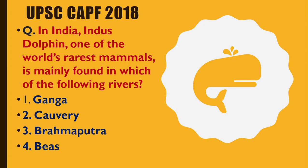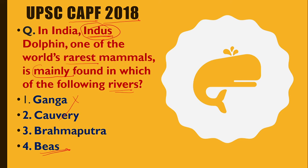Questions about the Gangetic Dolphin have been asked in UPSC examinations. In UPSC CAPF exam 2018, the question was: In India, the Indus Dolphin — one of the world's rarest mammals — is mainly found in which of the following rivers? Note carefully: it says 'Indus Dolphin,' not Gangetic Dolphin, so you should not mark Ganga as the answer. Since it is the Indus Dolphin, you need a tributary of the Indus. The answer is Beas — not Ganga, not Kaveri, not Brahmaputra. You have to always carefully read the words in between.